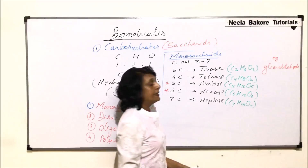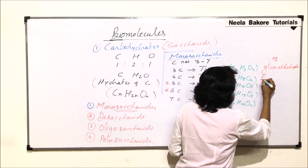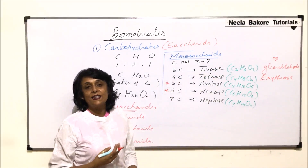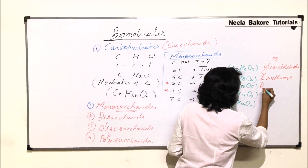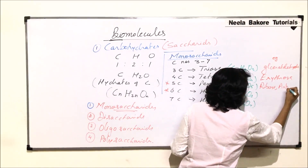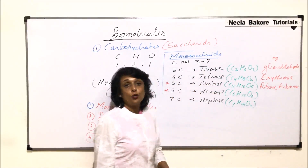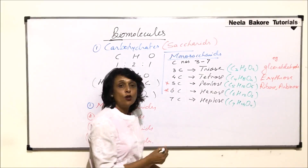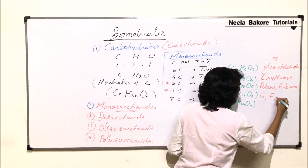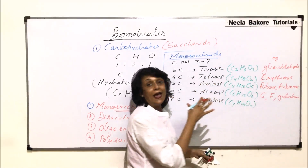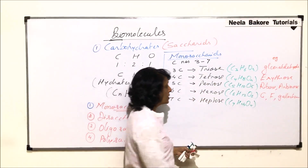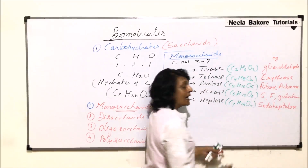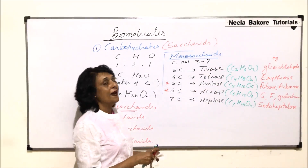For tetrose, one example is erythrose. Pentose sugars include ribose, deoxyribose, and arabinose — ribose and deoxyribose being the sugars that are parts of RNA and DNA respectively. Hexose sugars include glucose, fructose, and galactose.